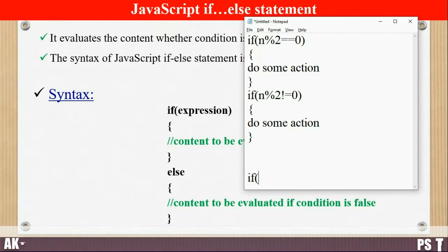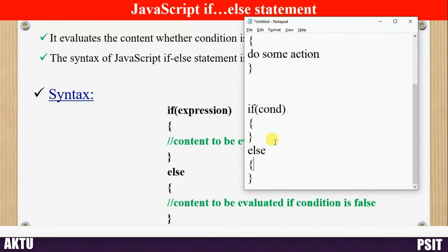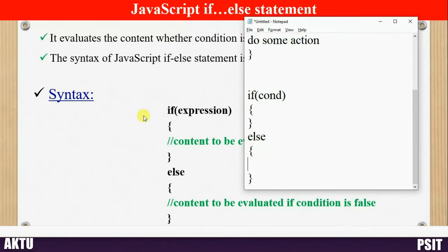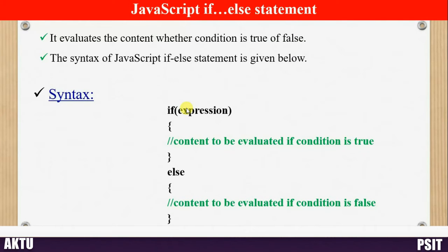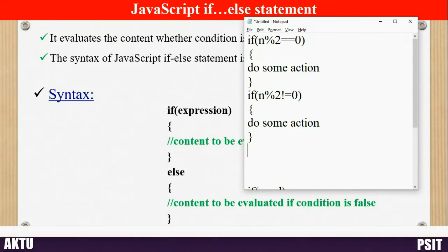For this we use the if-else statement. The else is an alternative block for if. If the condition is not fulfilled and you want to perform some alternative task, you can do so inside the else block. In if-else, at a time only one block will be executed. If the condition is true then the if block executes; if the condition is false then the else block executes.